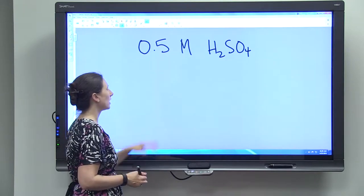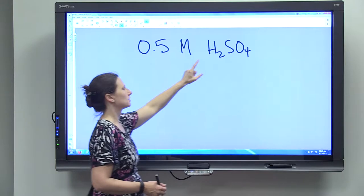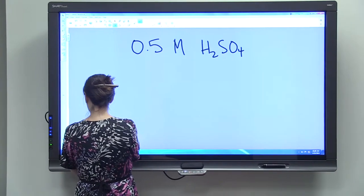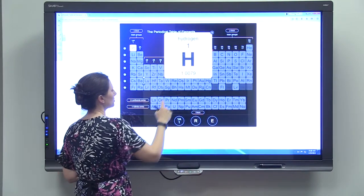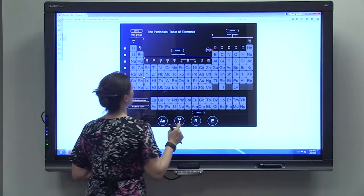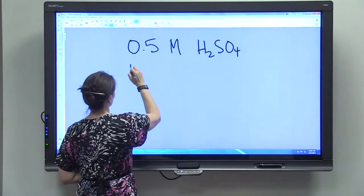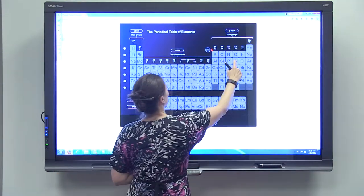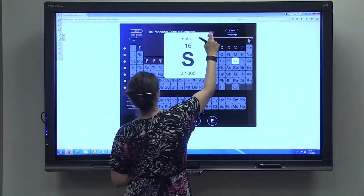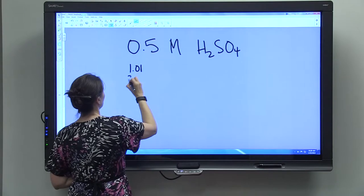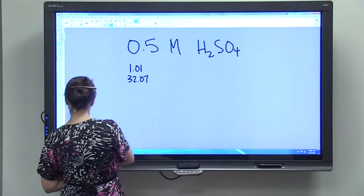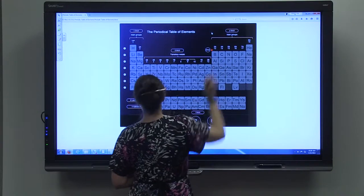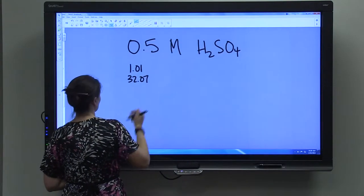First I'm just going to do a 0.5 molar sulfuric acid. So if we have sulfuric acid, we go to our periodic table and we know hydrogen is 1.01, sulfur is 32.07, and oxygen, let's go with 16.00. I'm just rounding these, not changing them really.